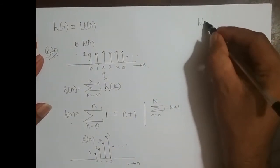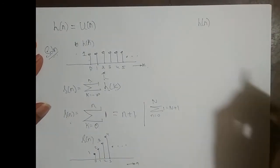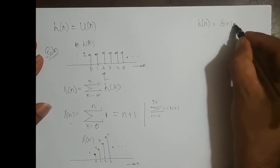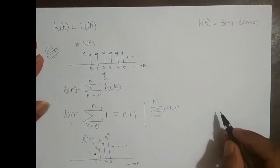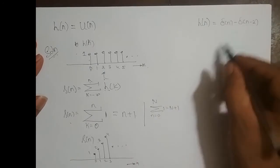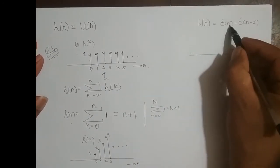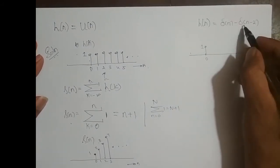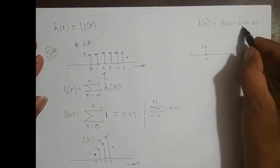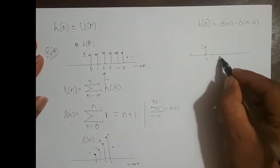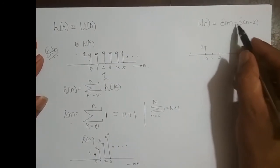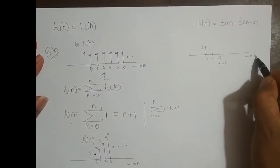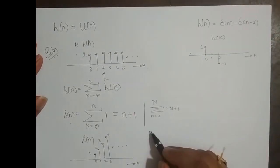We will take up one more — one simple impulse response: h of n is equal to delta of n minus delta of n minus 2. It is a finite length sequence. Delta of n is nothing but at n equal to 0 I have an impulse of 1. Delta of n minus 2 is delta of n shifted right two times, and its amplitude is scaled by minus 1. This is minus 1. I will write it directly in terms of k, h of k.